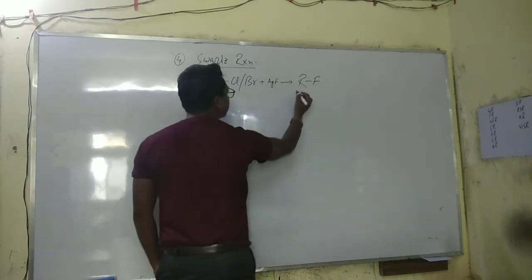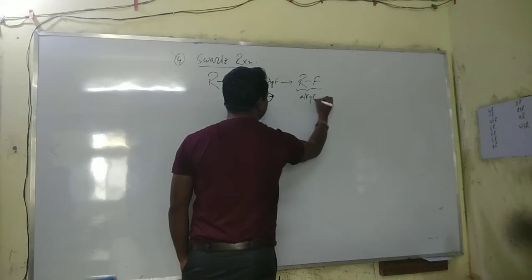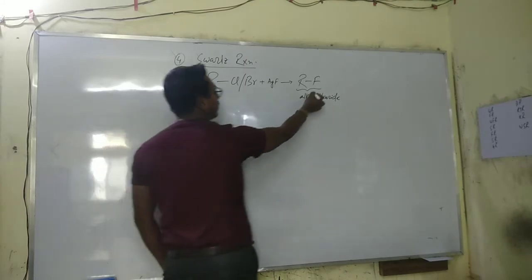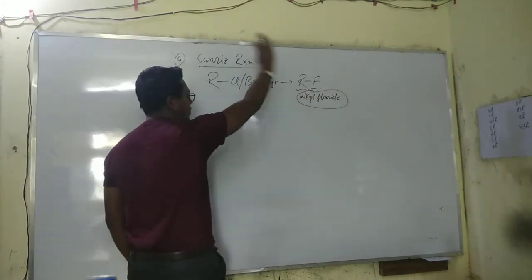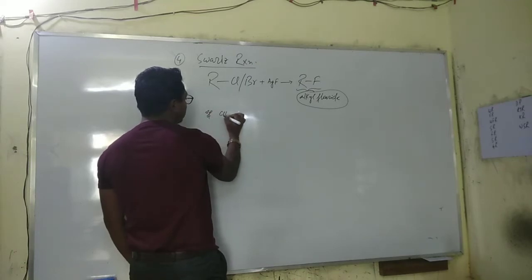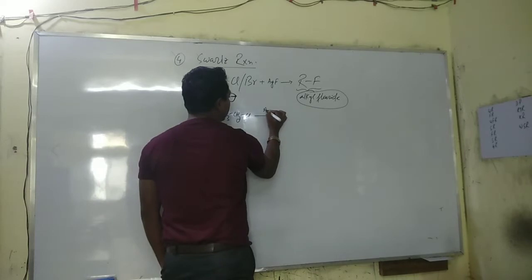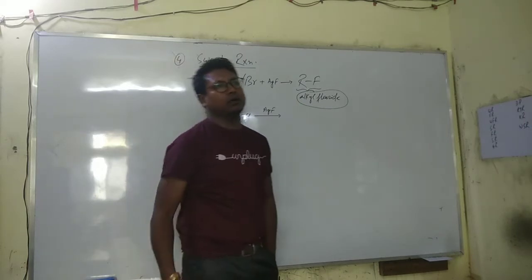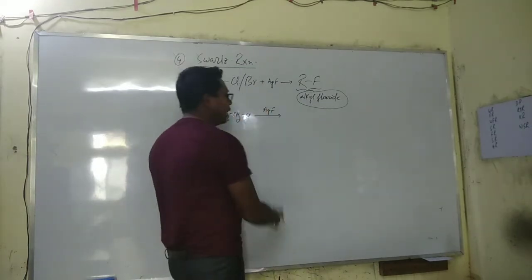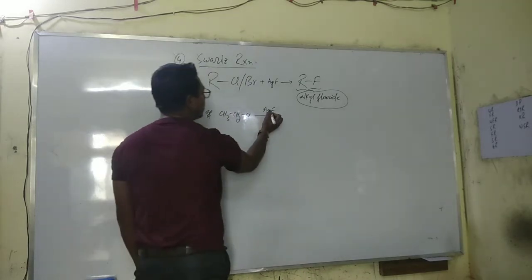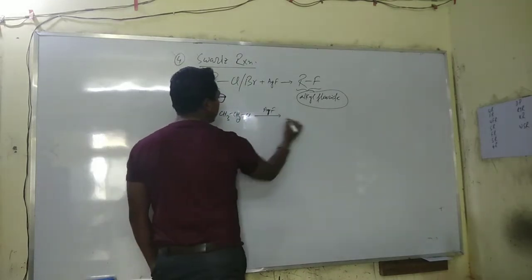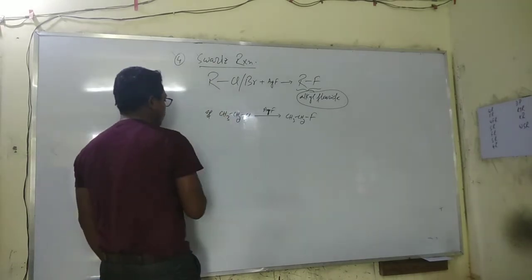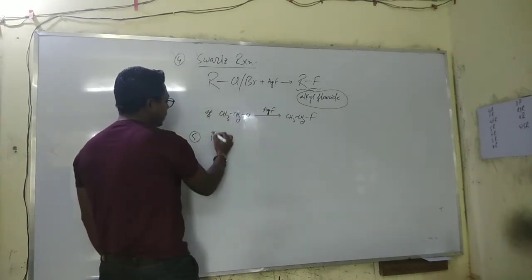This is our alkyl fluoride. Alkyl fluoride can be prepared from these reactions. For example, CH3-CH2-Cl reacted with AgF — instead of AgF you can also take cobaltic fluoride or antimony fluoride — to give alkyl fluoride.